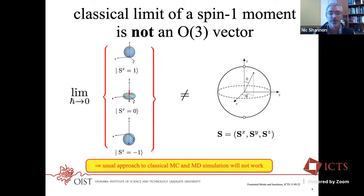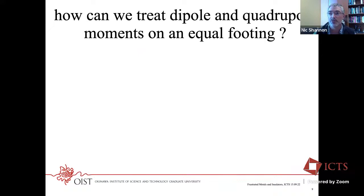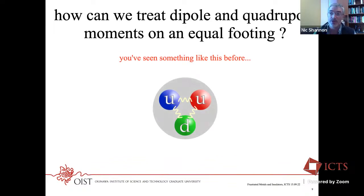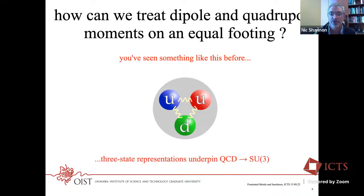So what can we do? This talk will be about a way of getting the same kind of simulations for spin-one that I've just described for spin-half. To do that, we need to treat dipole and quadrupole moments on equal footing and deal with a three-state basis — and you've seen something like this before.